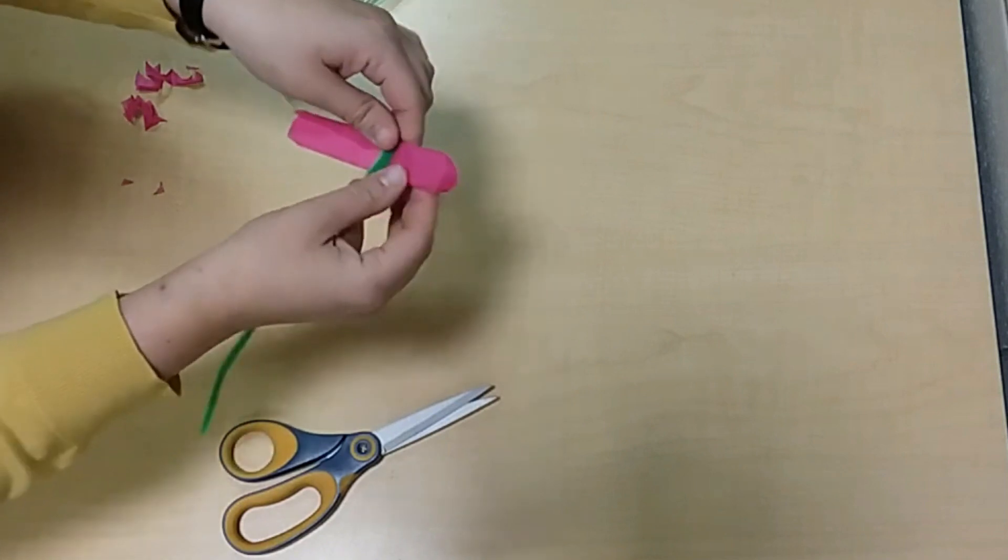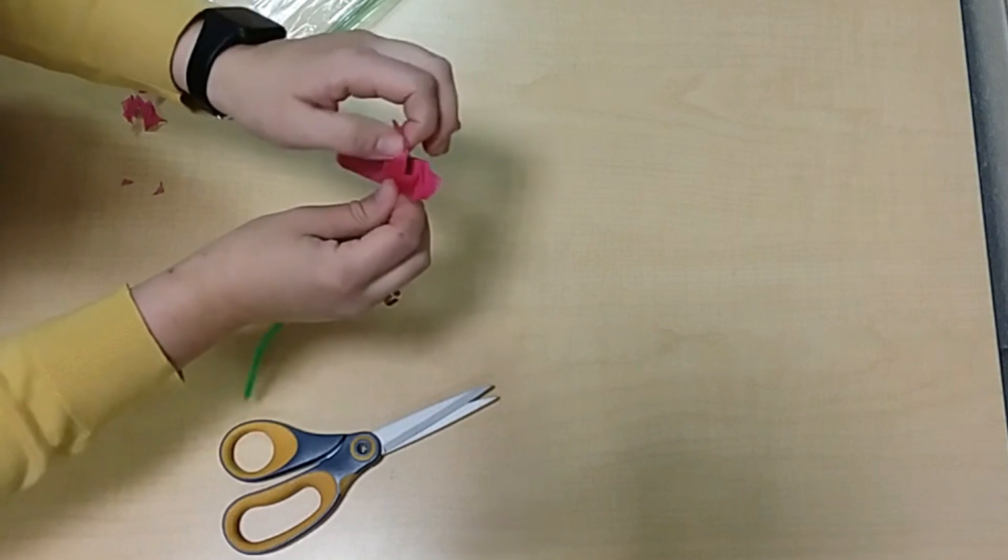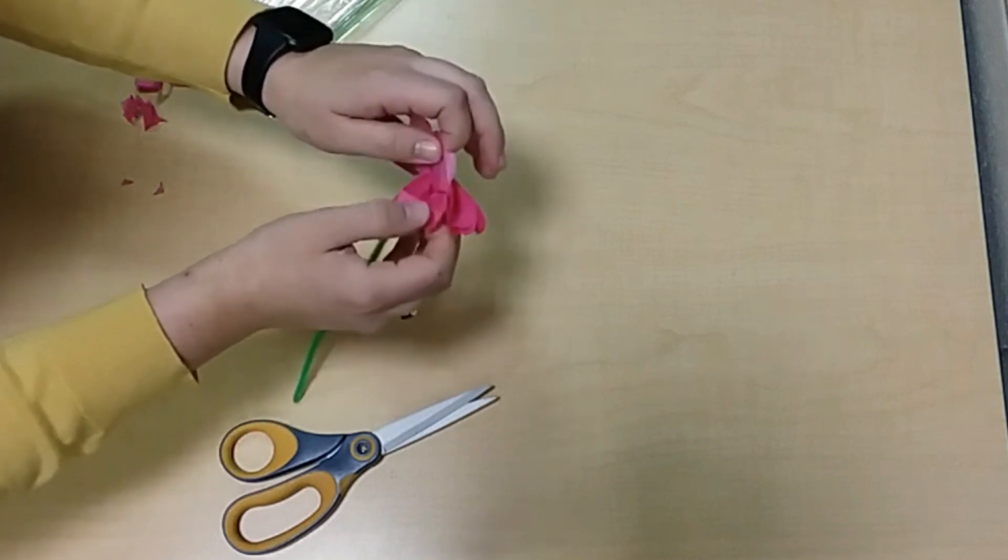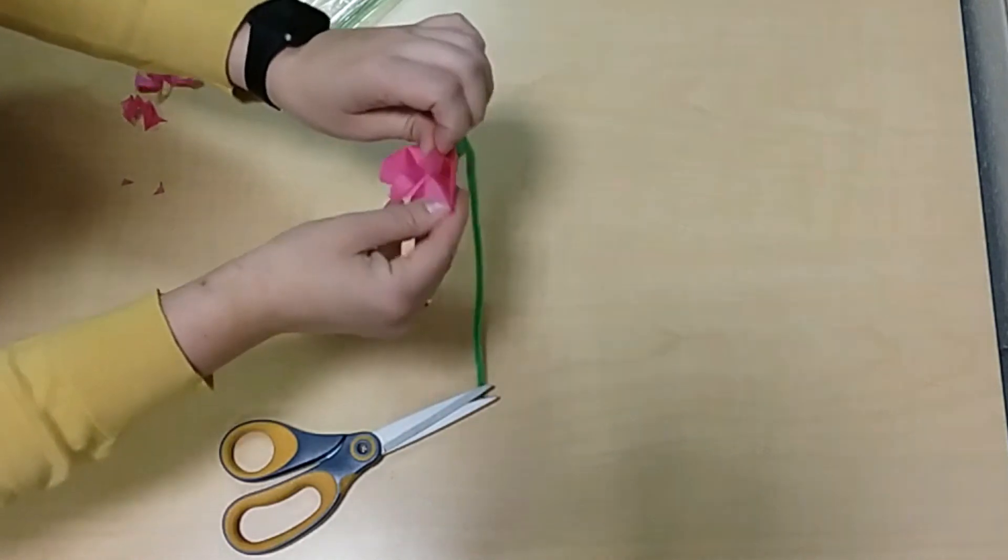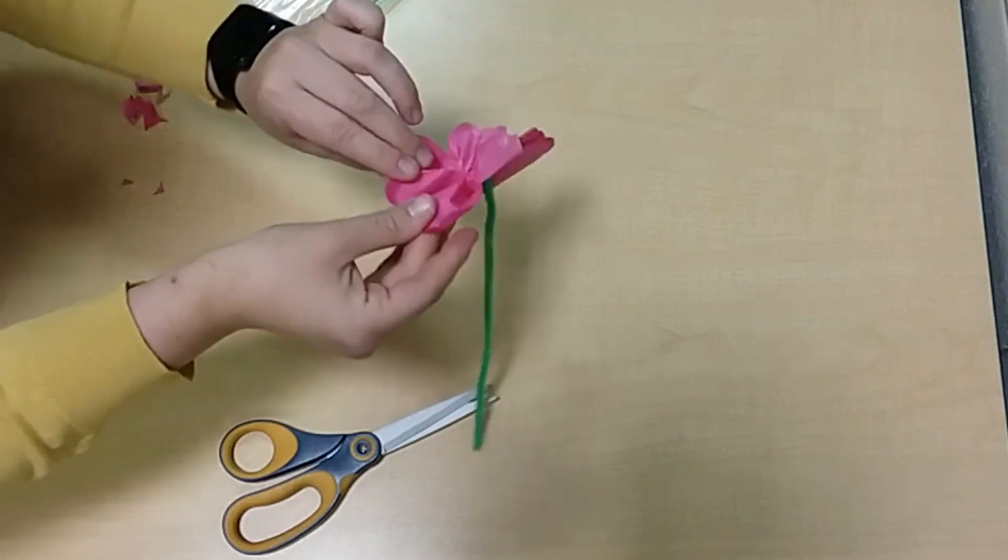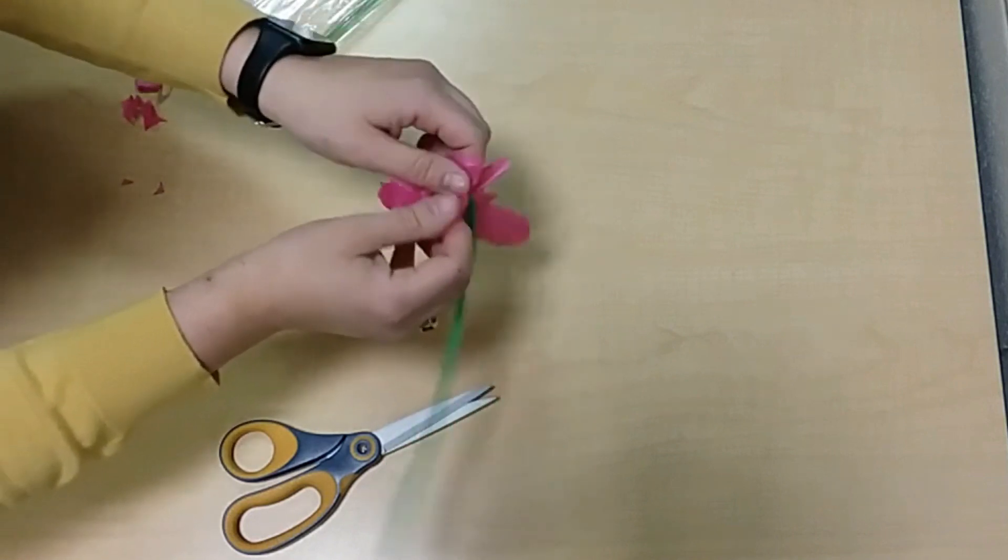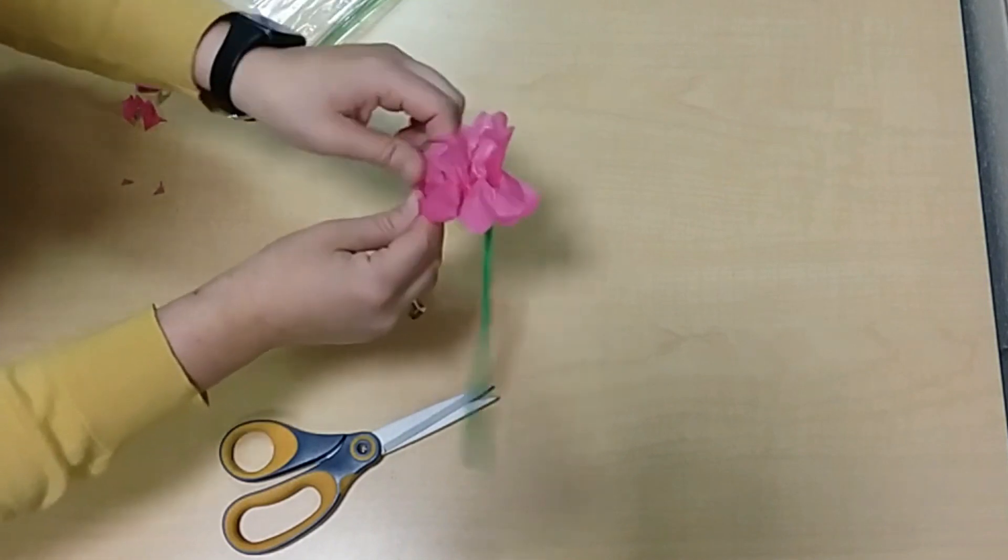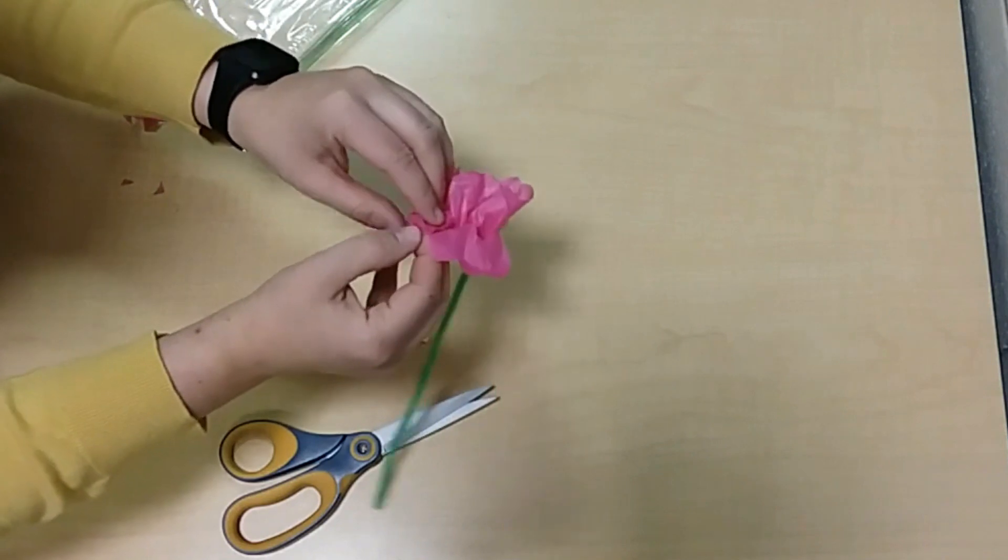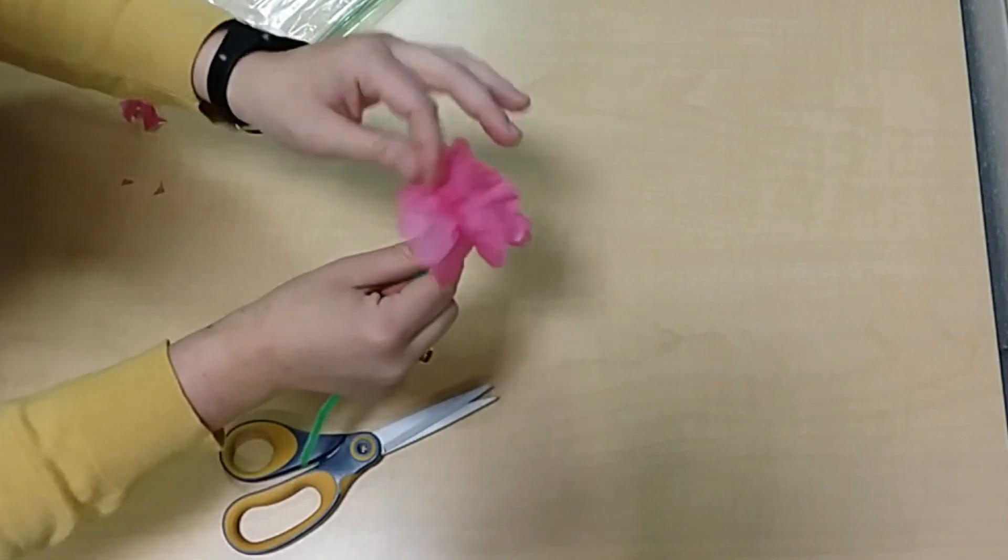And then what you're going to do is you're going to start pulling out the petals. So you're going to grab one, and you're going to want to be careful since this is tissue paper, but you're going to grab one piece and fold it out. And then another, pull it up, and pull another one, and you'll want to fold them out like that.